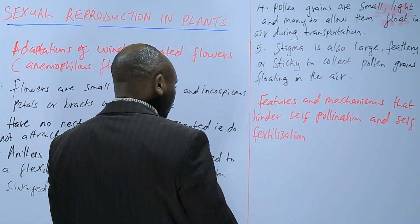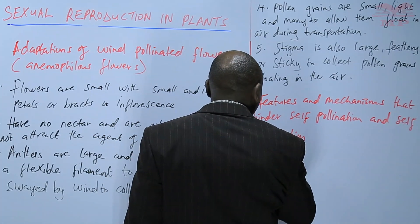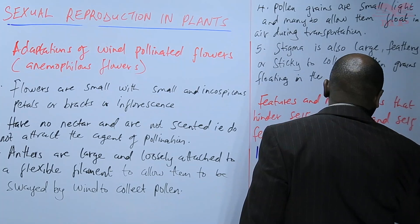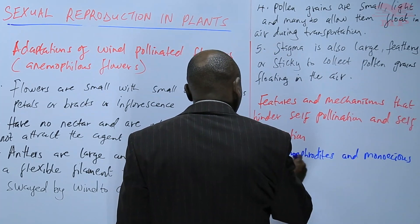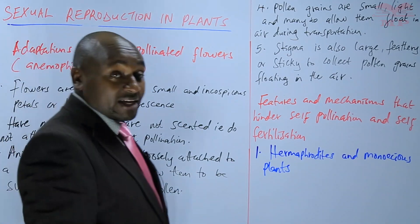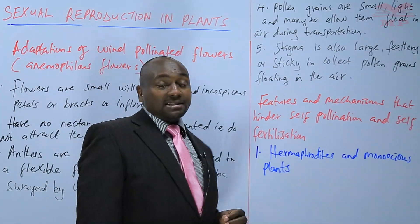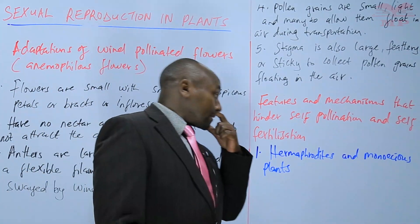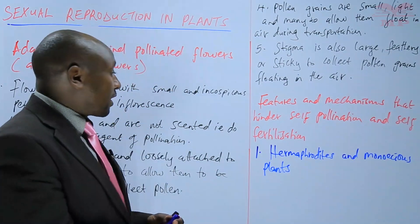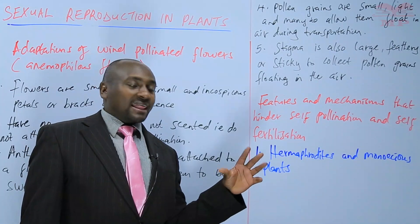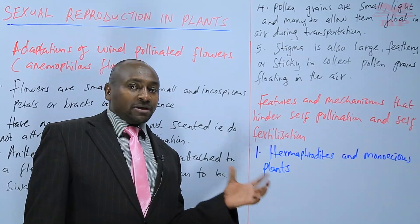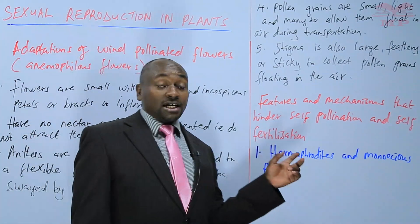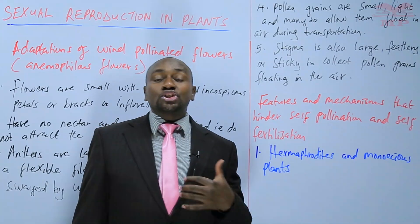One of those features involves hermaphrodites and monoecious plants. Hermaphrodites are those flowers that have both sexes, and monoecious plants are those plants that have flowers having both sexes. These hermaphrodites and monoecious plants have some natural features — such as scent, bright color, and large conspicuous petals — that ensure self-pollination does not take place because they encourage cross-pollination.